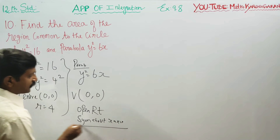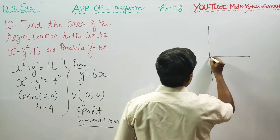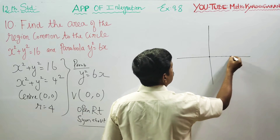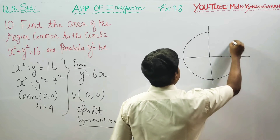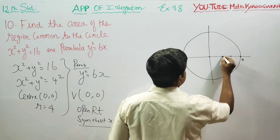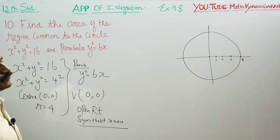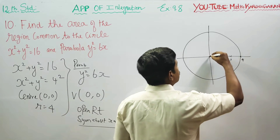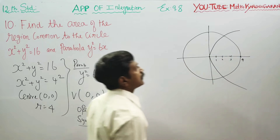With the information gathered, I am going to draw my diagram. The circle has center at the origin and radius 4 units. I will draw the circle in 4 units. The parabola has vertex at (0, 0) and opens rightward. I will draw the parabola in this shape.